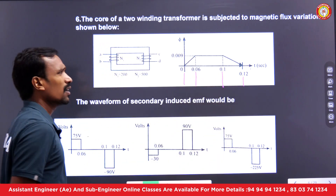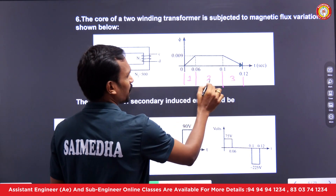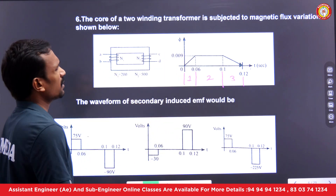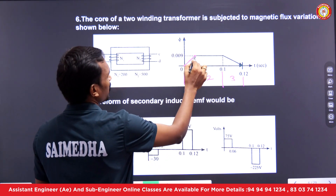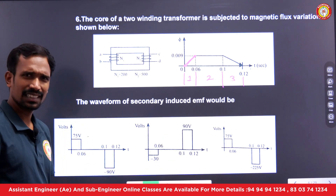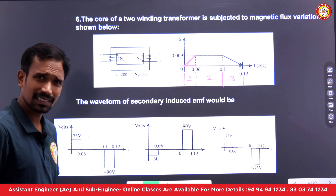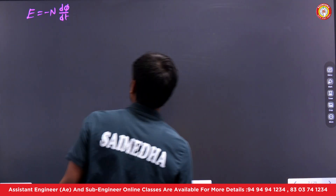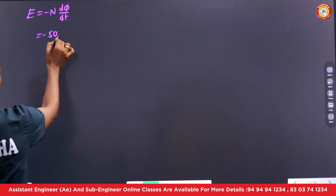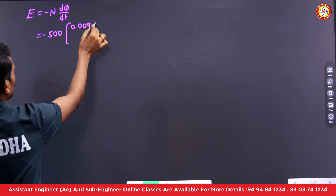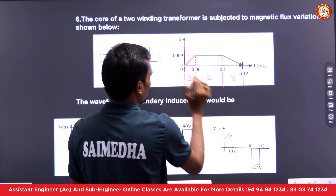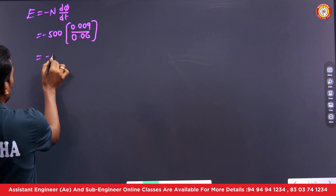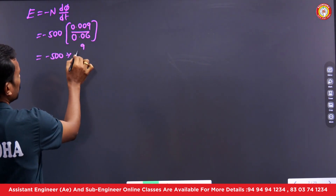We need to draw this graph in three situations. In the first situation, the change in flux is 0.009 and the change in time is 0.06. The change from 0 to that point is positive. N2 is 500 turns, so we calculate: E1 = −500 × (0.009 / 0.06).